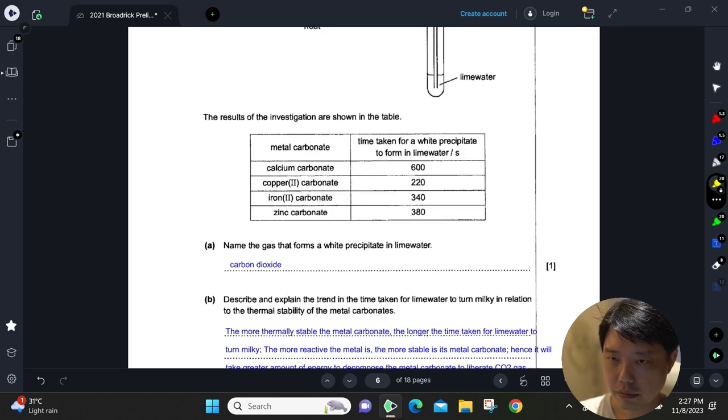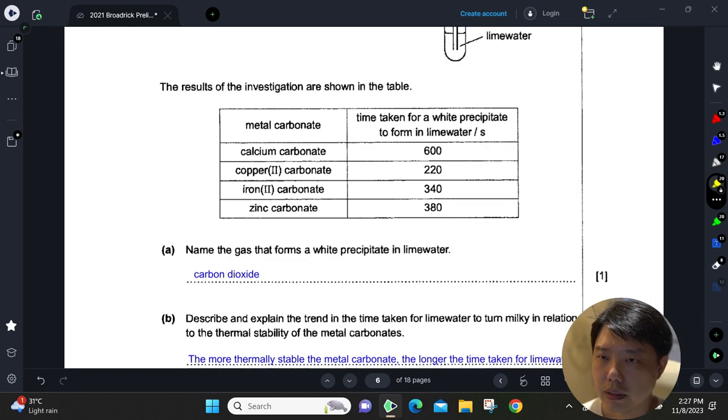You can see the time taken for the white precipitate to form. The shorter the time, the less stable the carbonate because it's very easy to break down. The longer the time, the more stable the metal carbonate is.